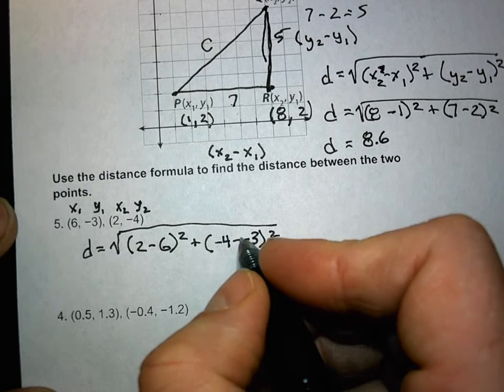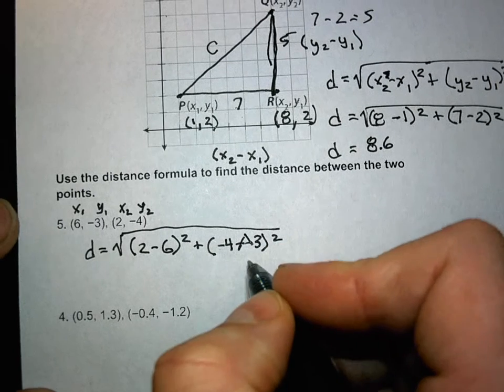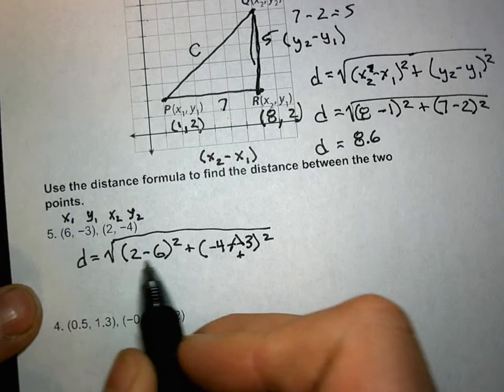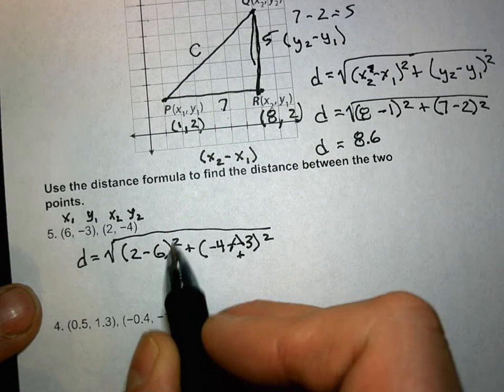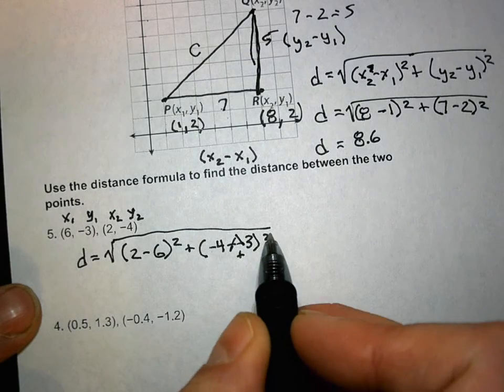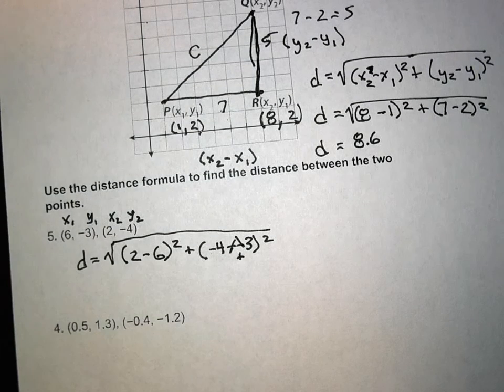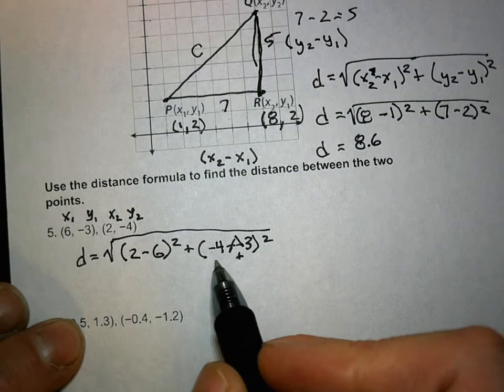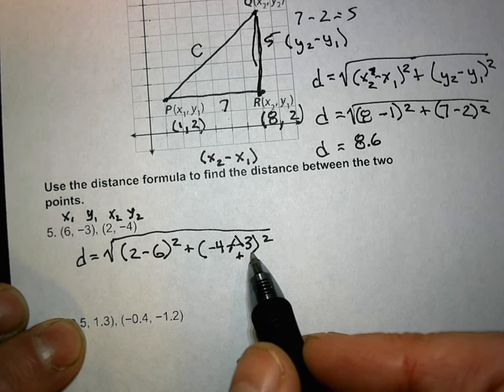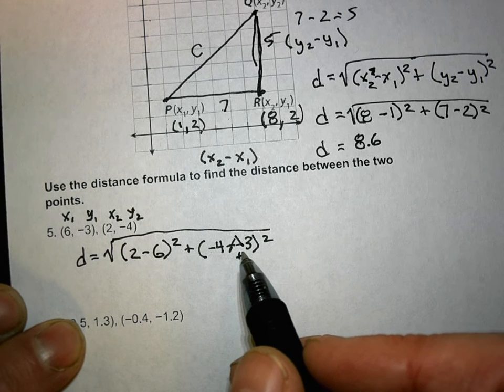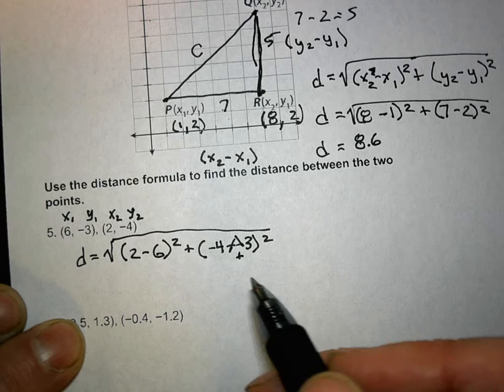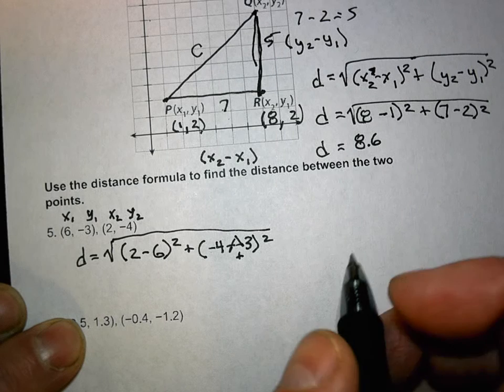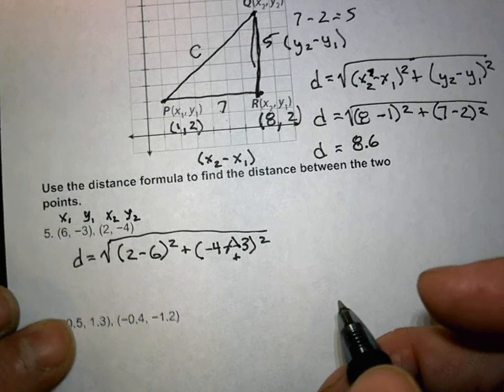So remember, what happens when I've got a minus and negative? What does it become? So I can just do this, the square root of 2 minus 6 squared plus negative 4 plus 3 squared. We had a minus and minus 3, didn't we? What happens when you have minus and minus? Do you want us to round? Yeah. And if it doesn't give you anything, generally round to the tenths.